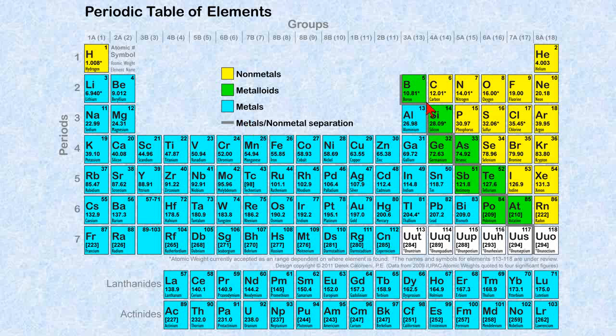Here's this little zigzag line that's on all your periodic tables. Everything to the left of it is a metal. Everything to the right of it is a non-metal.